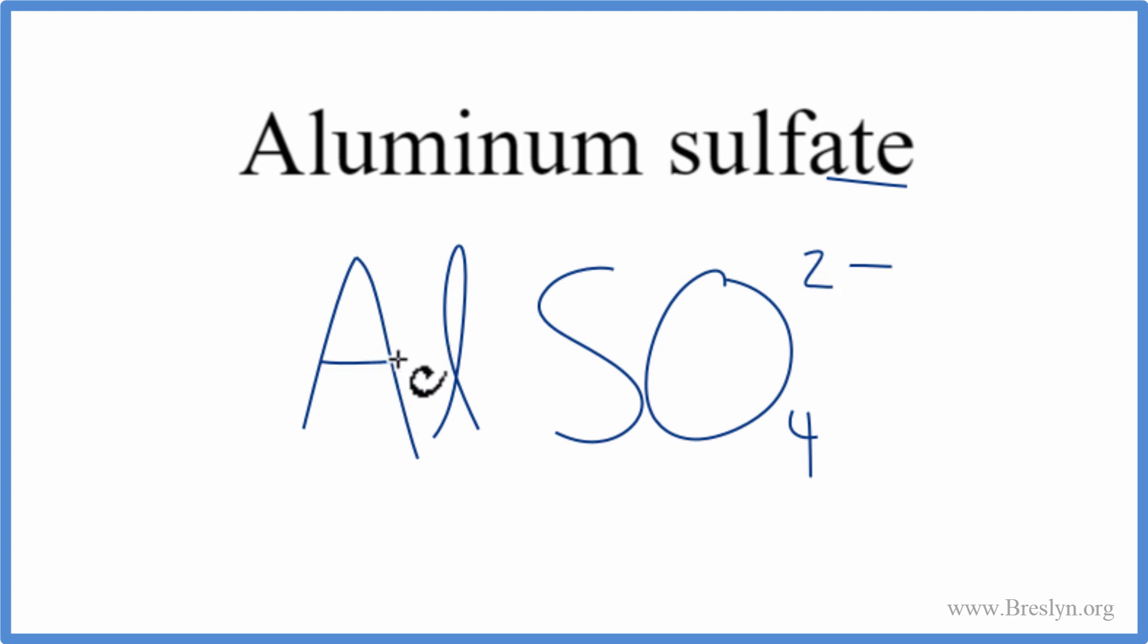We go to the periodic table, we look up aluminum, it has a 3 plus ionic charge, and these charges here, they all need to add up to zero, to have a net charge of zero, for this to be a neutral compound, like aluminum sulfate.